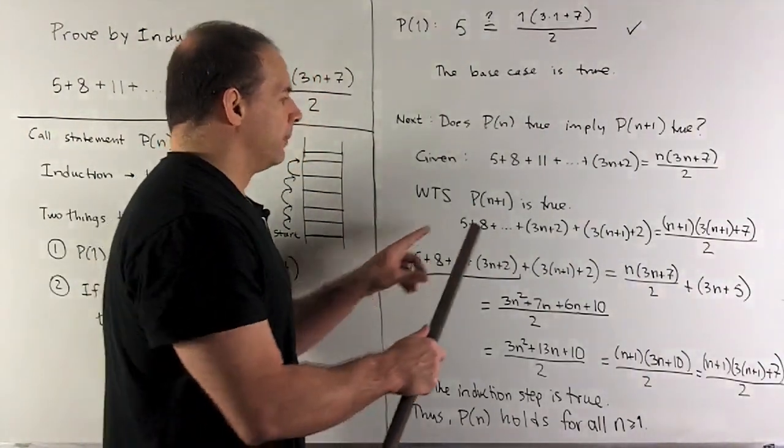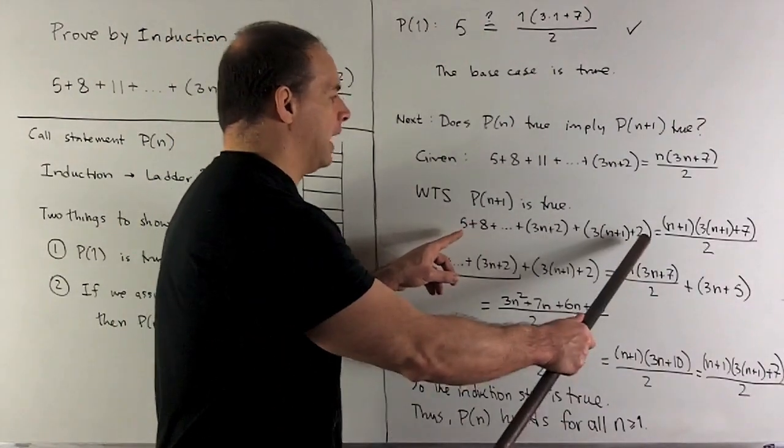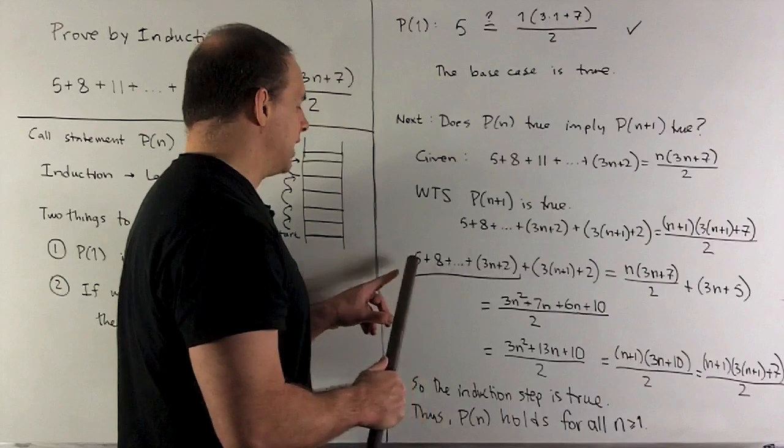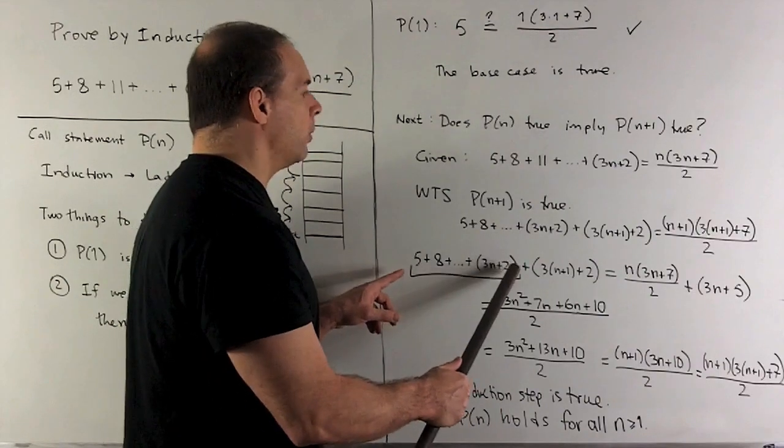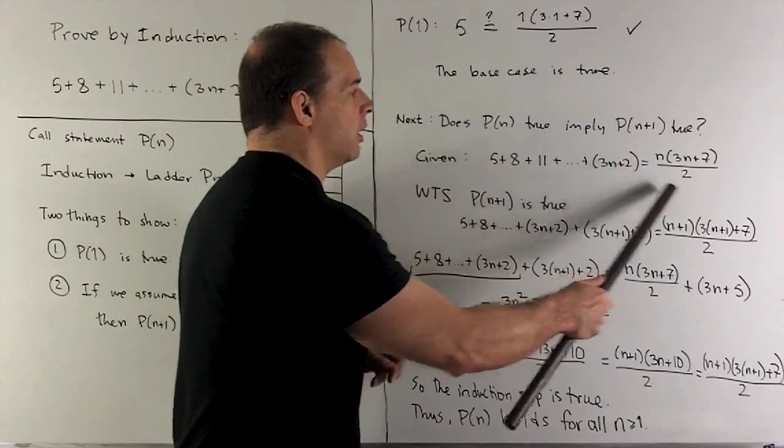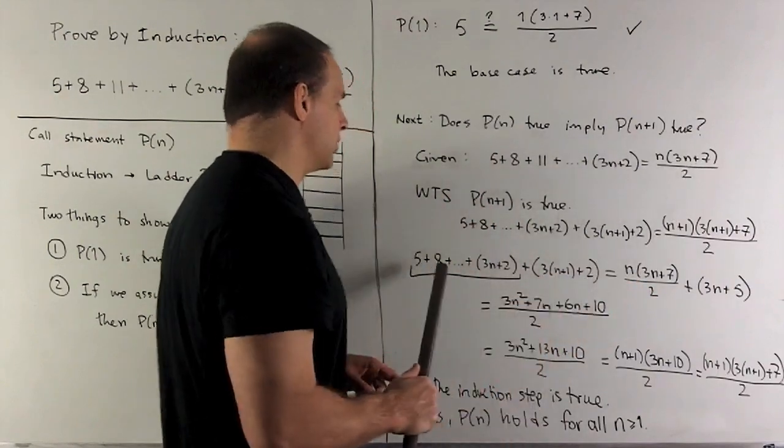I write out the left-hand side of P(n+1), so that's right here. We'll notice, if I take all the terms up to 3n plus two, that's going to be the left-hand side of P(n). So I take what's on the right side of P(n) and substitute.